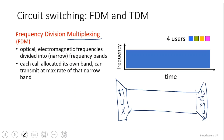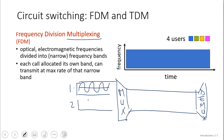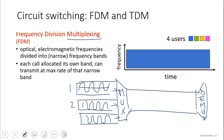We have wave signals going on. This is basically one user, we have another user with wave signals, and we have a last one with a third wave signal. They're all going into what we call the multiplexer, and then the multiplexer will basically translate each of these signals in such a way that they get into this single channel.